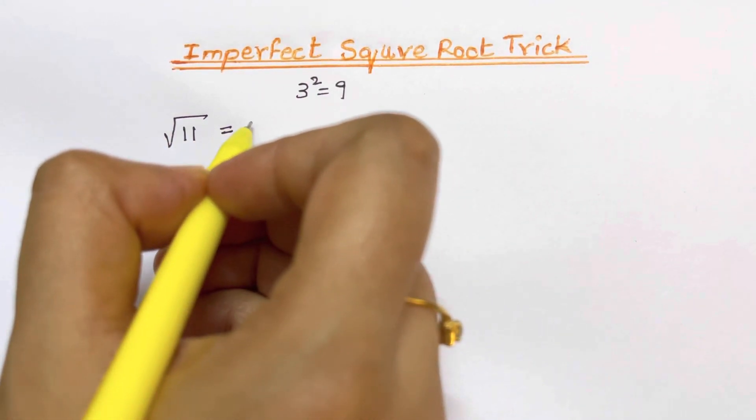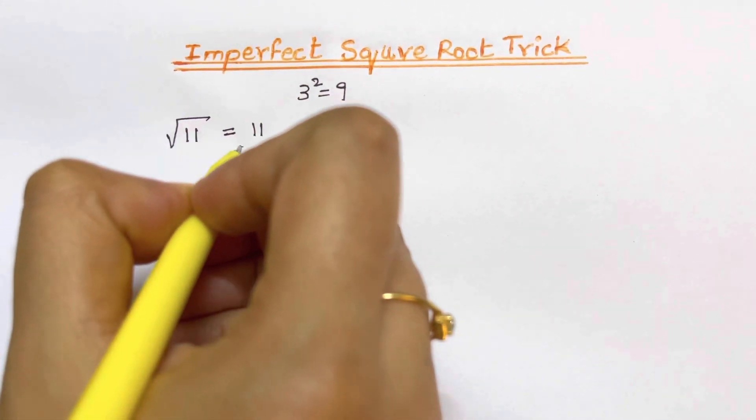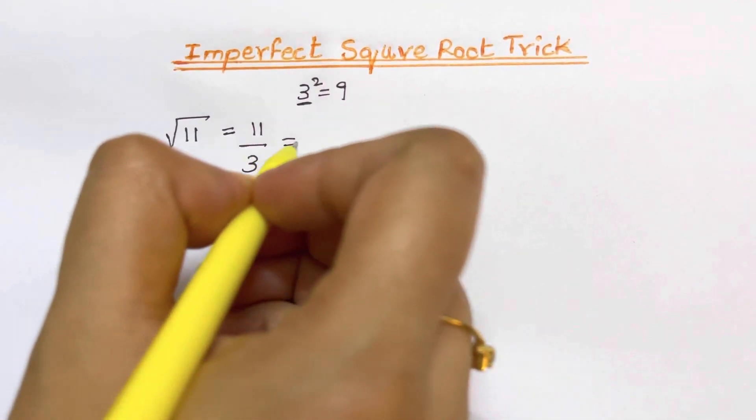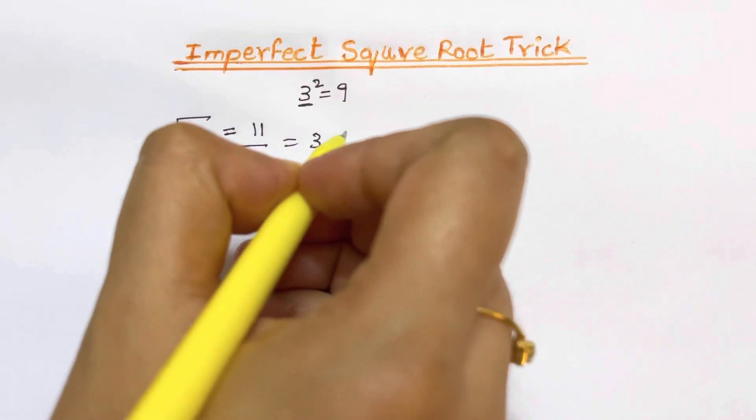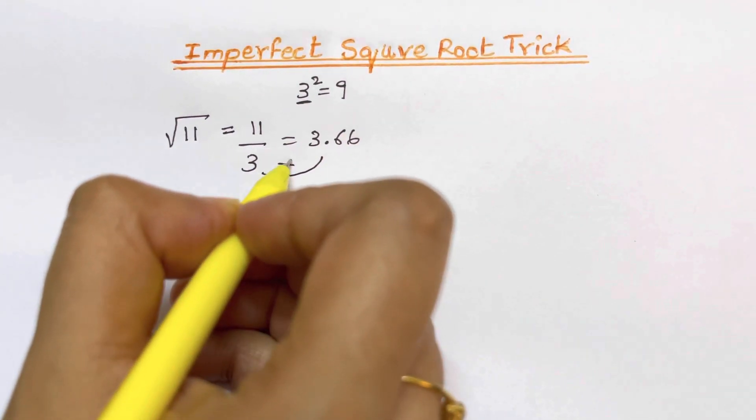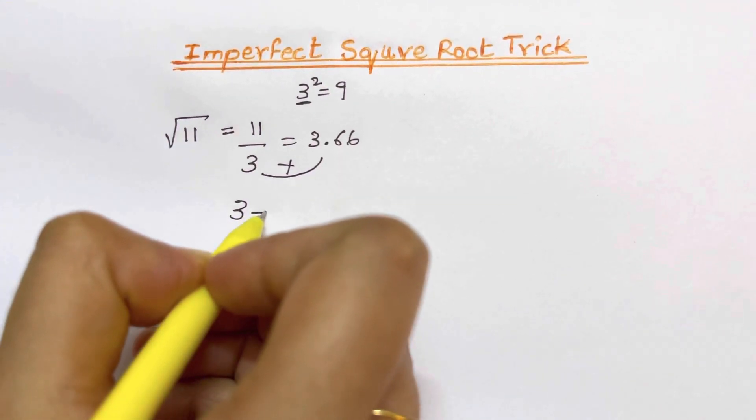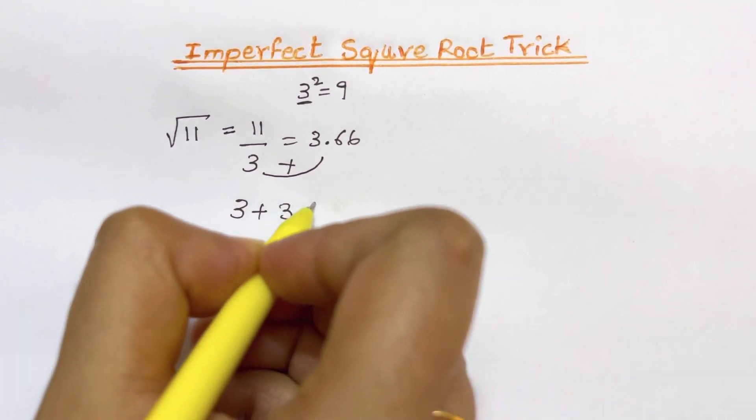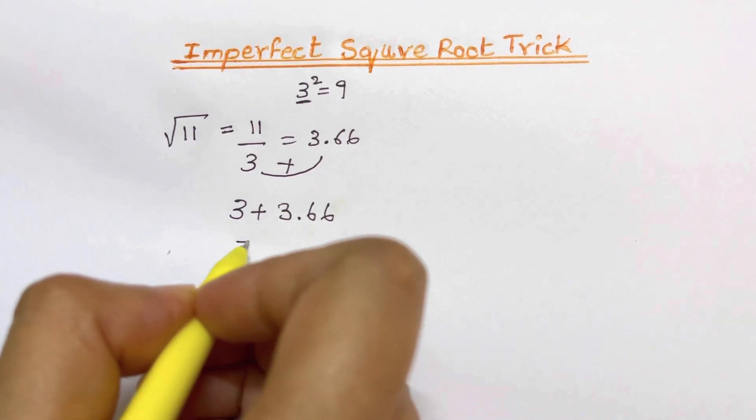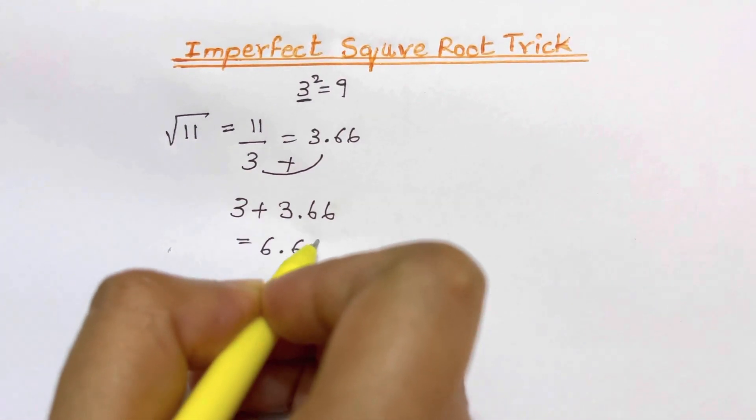So we are going to divide by that number 11 divided by 3. So 11 divided by 3 gives us 3.66 and now our next step is to add these two numbers 3 plus 3.66. 3 plus 3.66 would just give us 6.66.